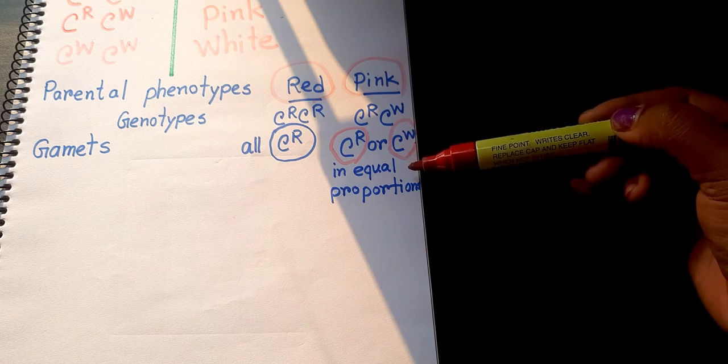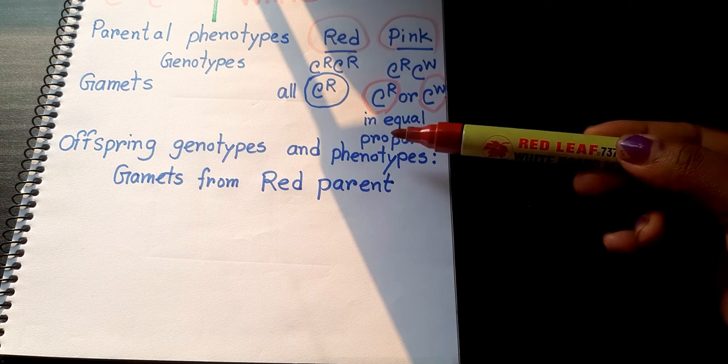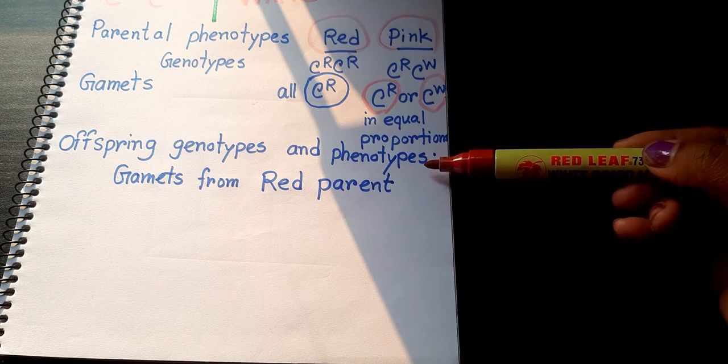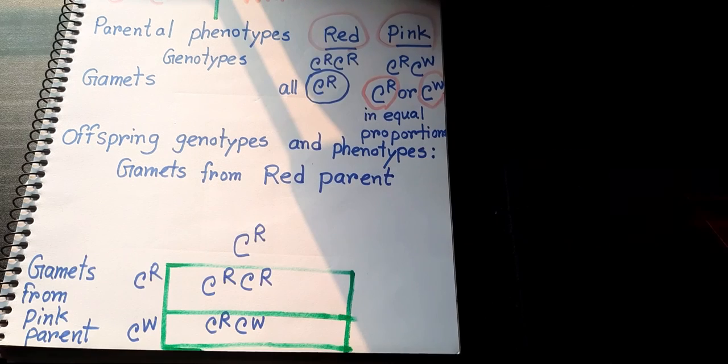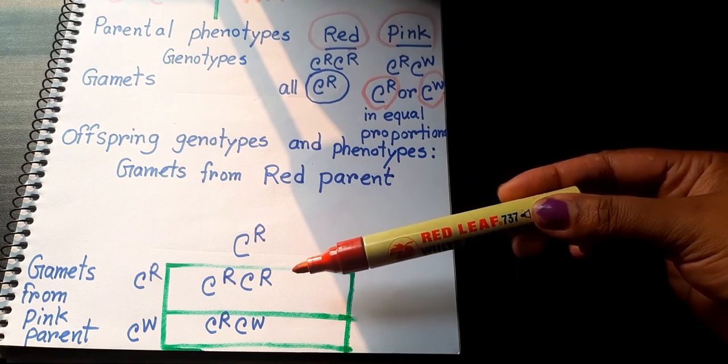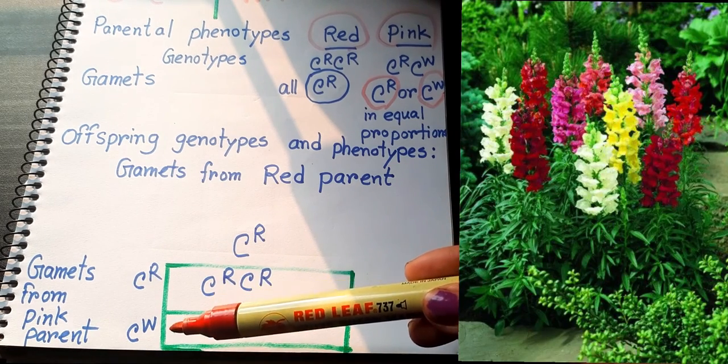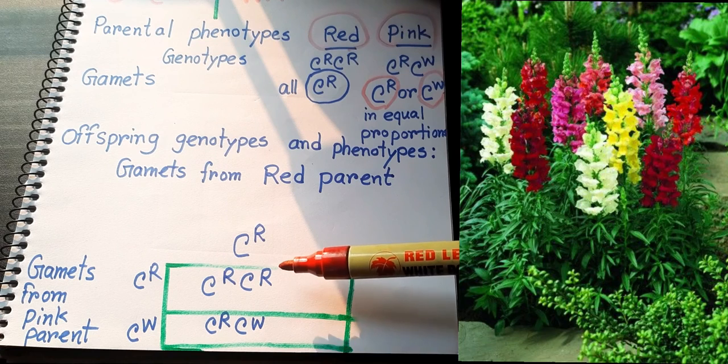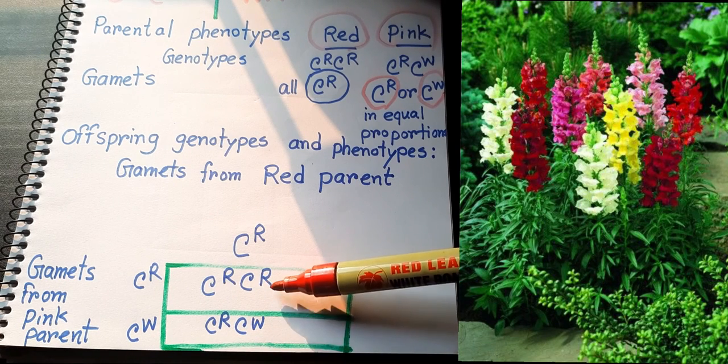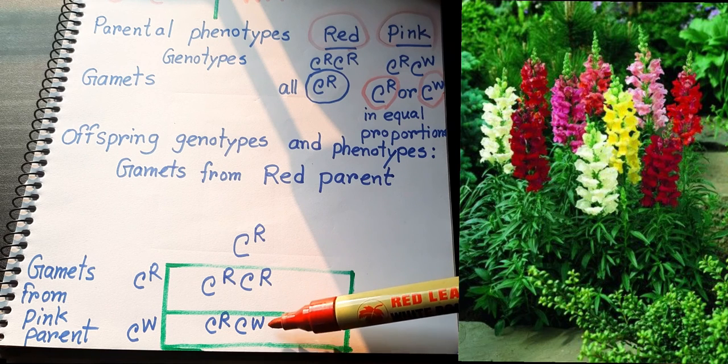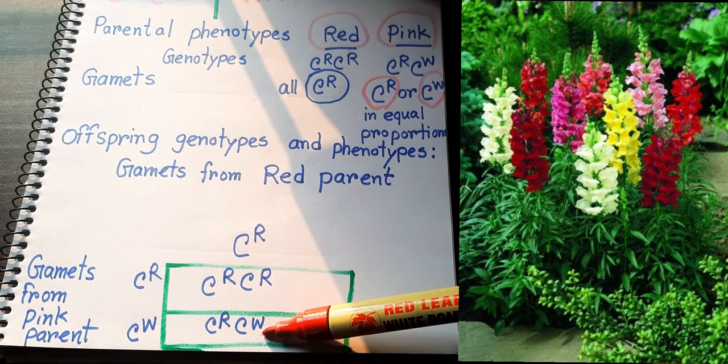Offspring genotypes and phenotypes. Gametes from red parent - what will happen? Here you can see gametes from pink parent: CR and CW. So what's the color? Here is CR and CR, so it will obviously be red flower. And this is CR and CW, so it will be pink flowers.